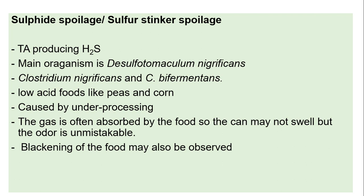Sulfide spoilage affects low acid foods like peas and corn, and is caused by under processing. The gas produced is often absorbed by the food, so the can may not swell, but the odor is unmistakable.